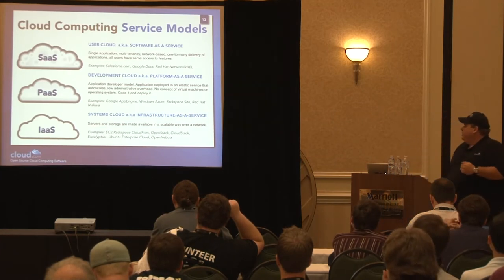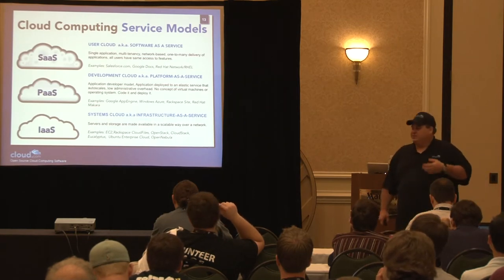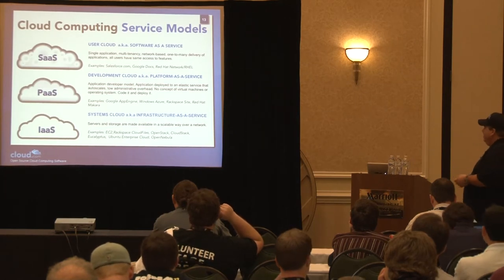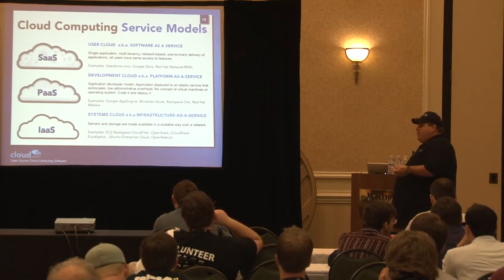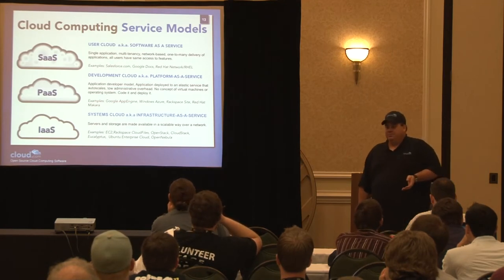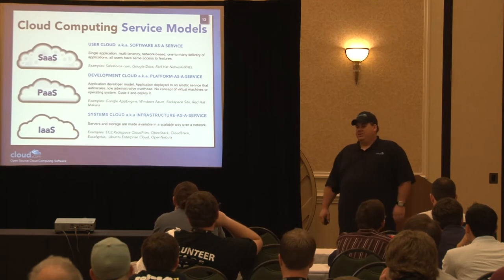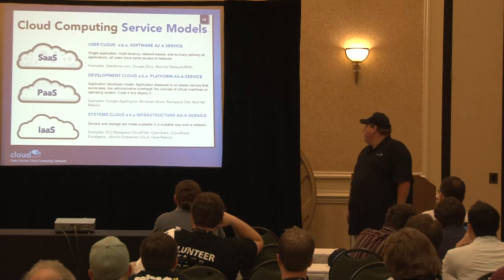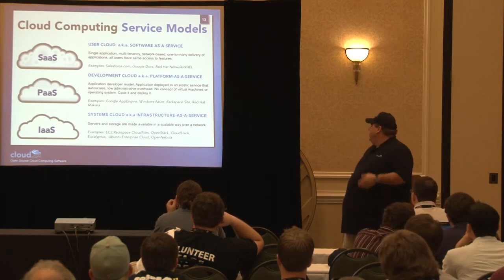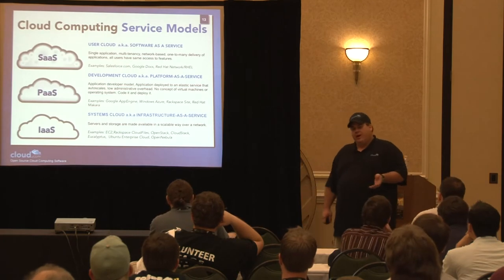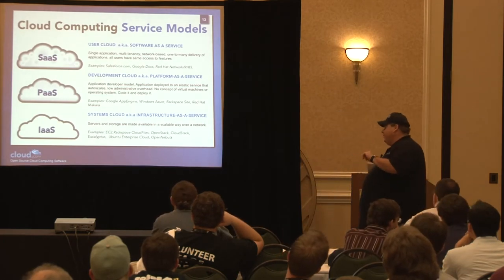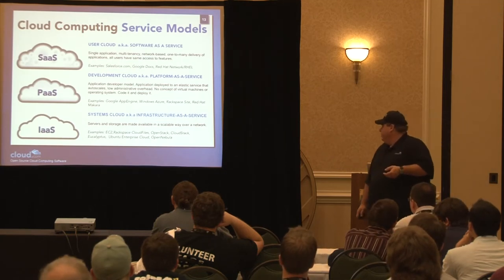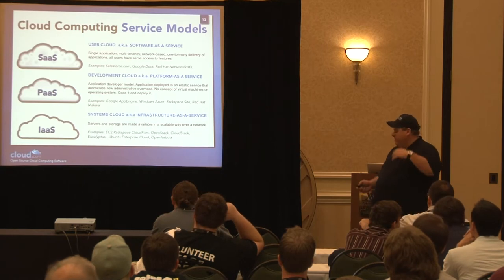At the bottom is the systems cloud — infrastructure as a service — which is abstracted virtualization, compute, and networking. Examples: Amazon EC2, Amazon S3, Rackspace Cloud Files, OpenStack (sponsored by Rackspace), CloudStack from cloud.com, Eucalyptus, Ubuntu, and OpenNebula.